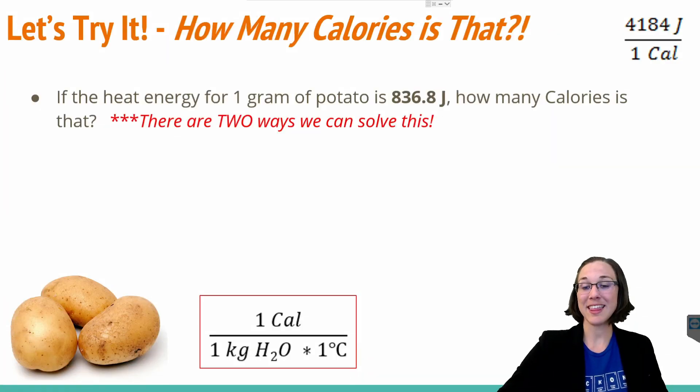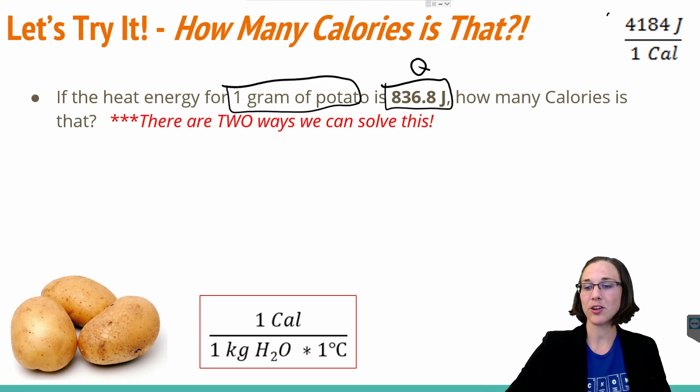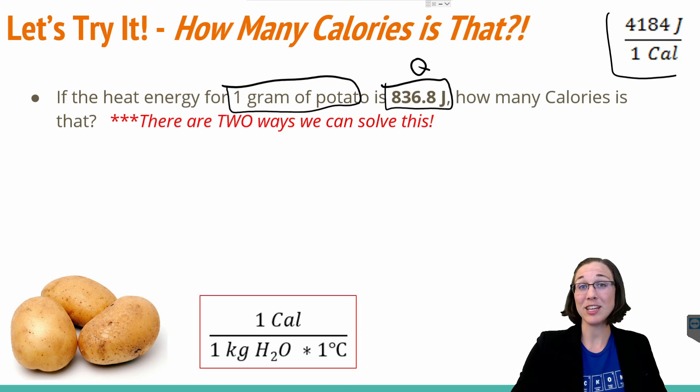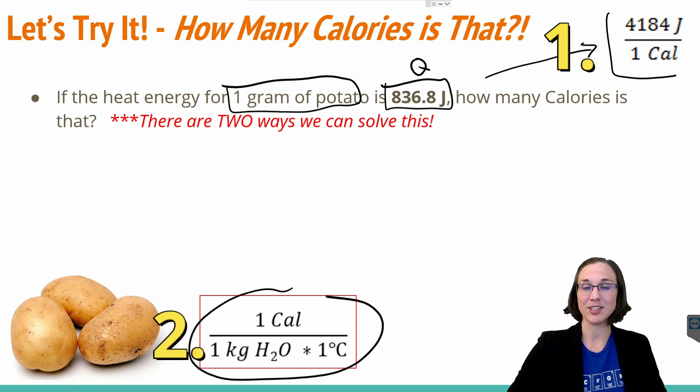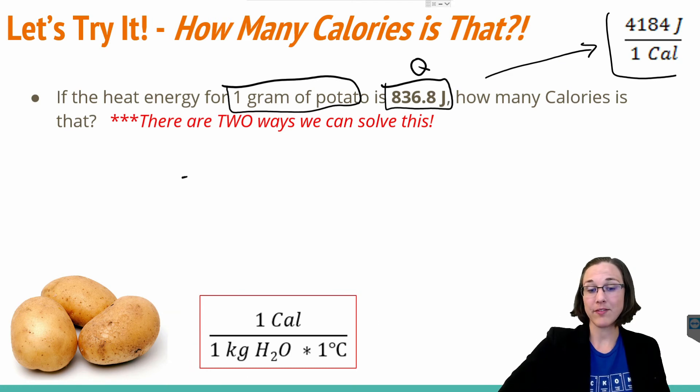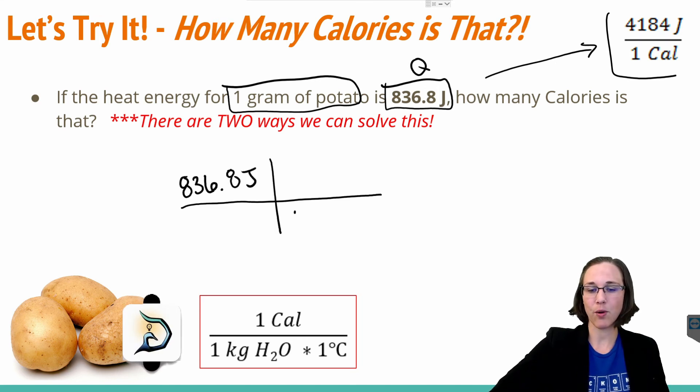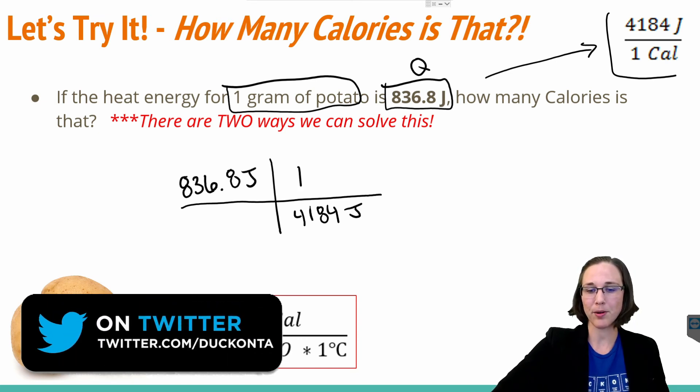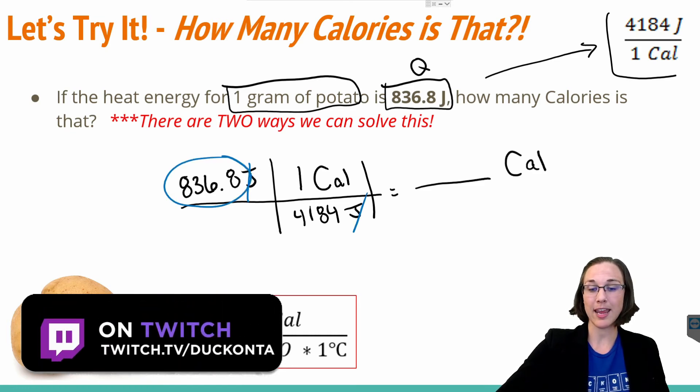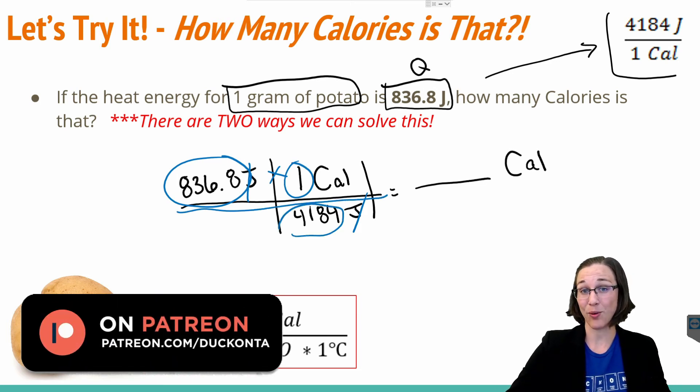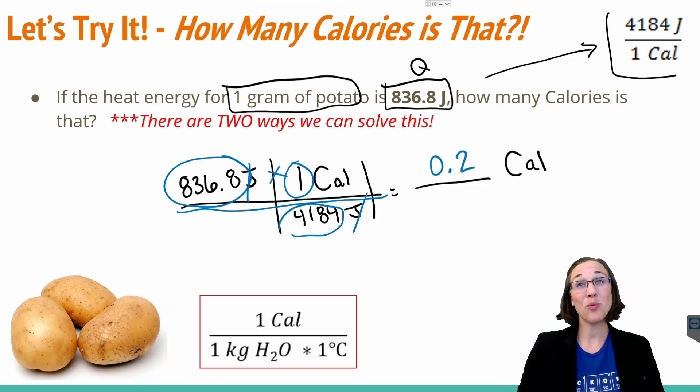As promised before, we can take that value that we found from Q and figure out how many calories is in that one gram of potato. So all we have to do is use our conversion factor, 4184 joules per one uppercase calorie, to figure out how many food calories are in that many joules. There are two different ways you can solve this. I'm going to show you this way using the conversion factor now. If you're interested in using this conversion factor, stick around till after the outro to see how to do it. Let's start with our given, which is 836.8 joules from what we calculated earlier. And then we're just going to plug in our 4184 joules on the bottom and one uppercase calorie on the top so that our joules will cancel. Now it's easy to see that all we have to do is take 836.8 times one and divide that by 4184. And that gives us a value of 0.2 calories in one gram of potato.